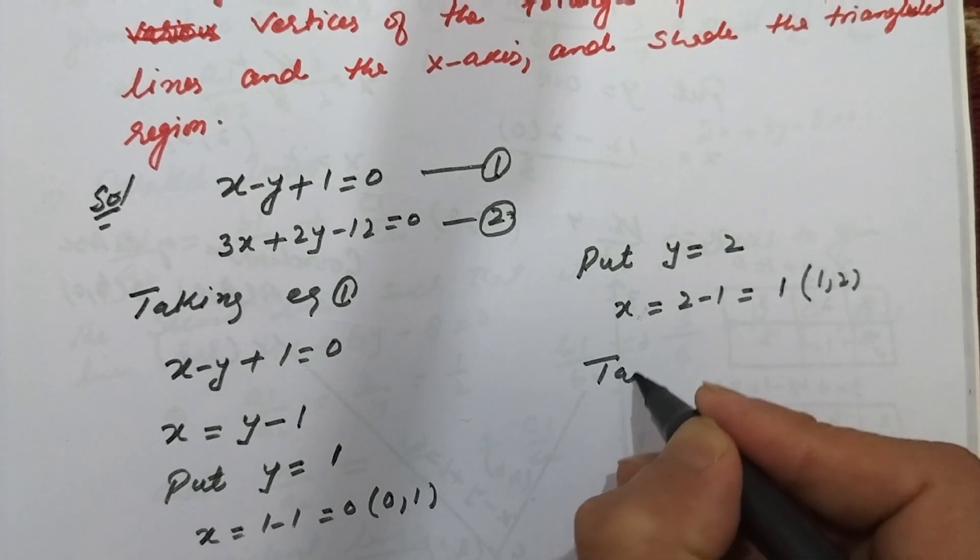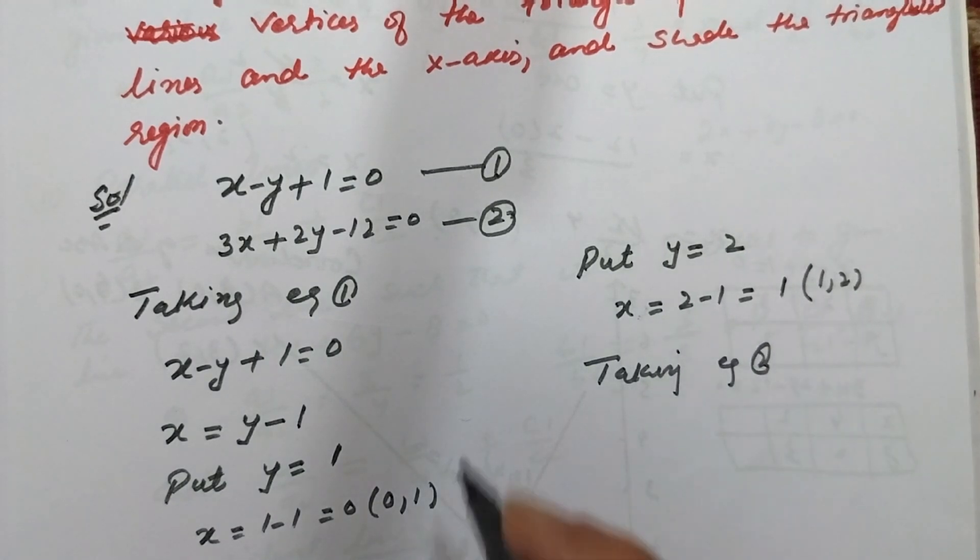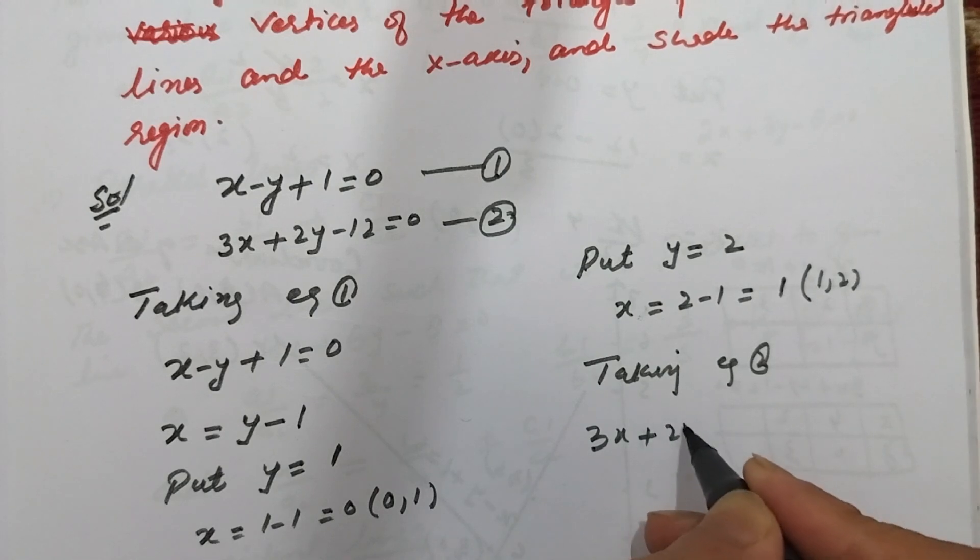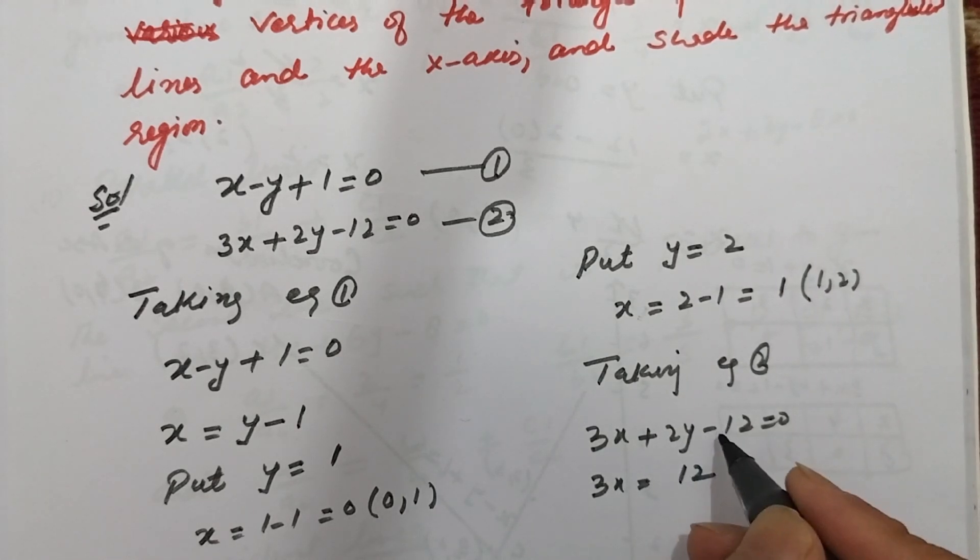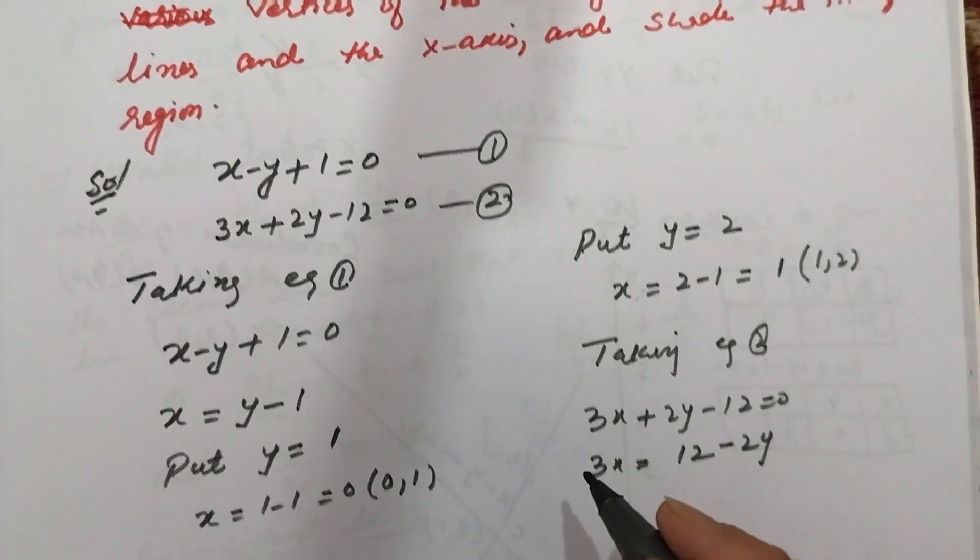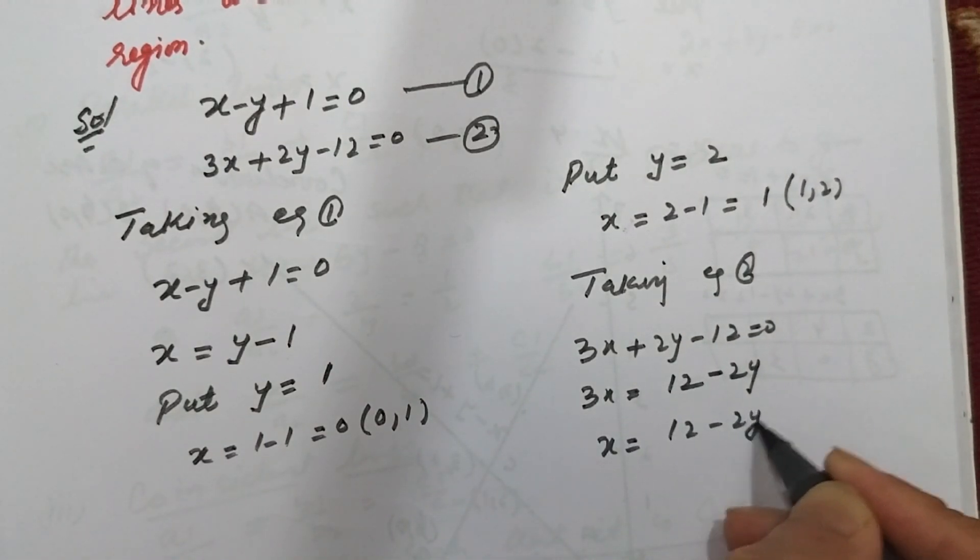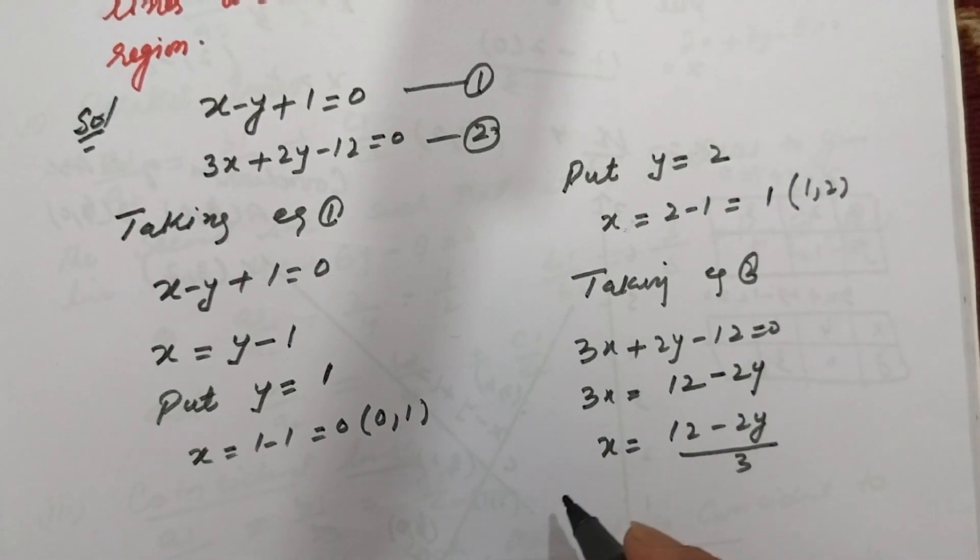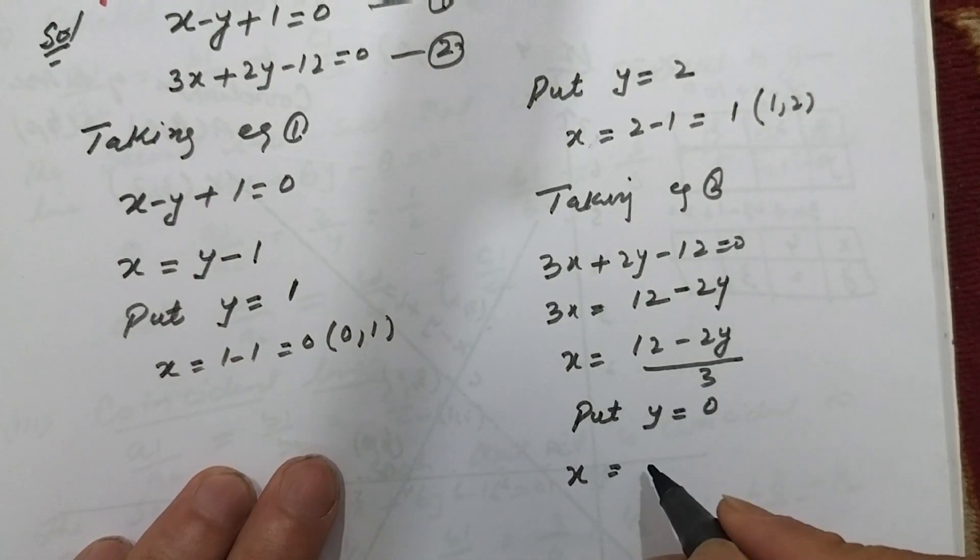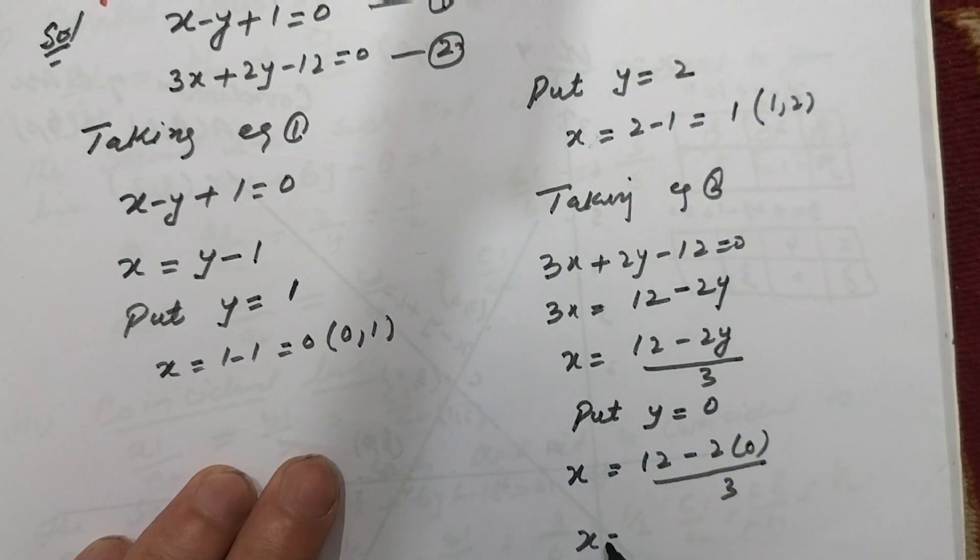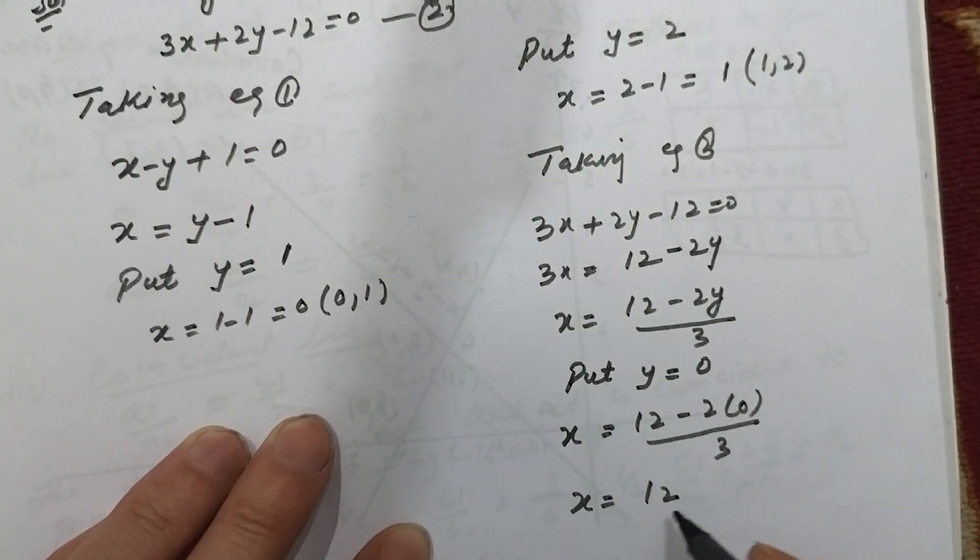Now taking equation second, 3x plus 2y minus 12 equal to 0. We get 3x equal to 12 minus 2y, so x equal to 12 minus 2y divided by 3. Put y equal to 0. X will be 12 minus 2 into 0 divided by 3, which equals 4. So we get 4 comma 0.